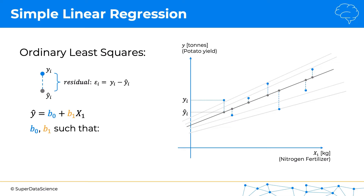The best equation is one where the parameters b0 and b1 are such that the sum of the squares of the residuals is minimized — that's why it's called the ordinary least squares method. We take all the residuals, square them for every single data point, then add them up. Whichever regression line gives the smallest value is the best regression line, guaranteeing the line goes nicely through the data points.